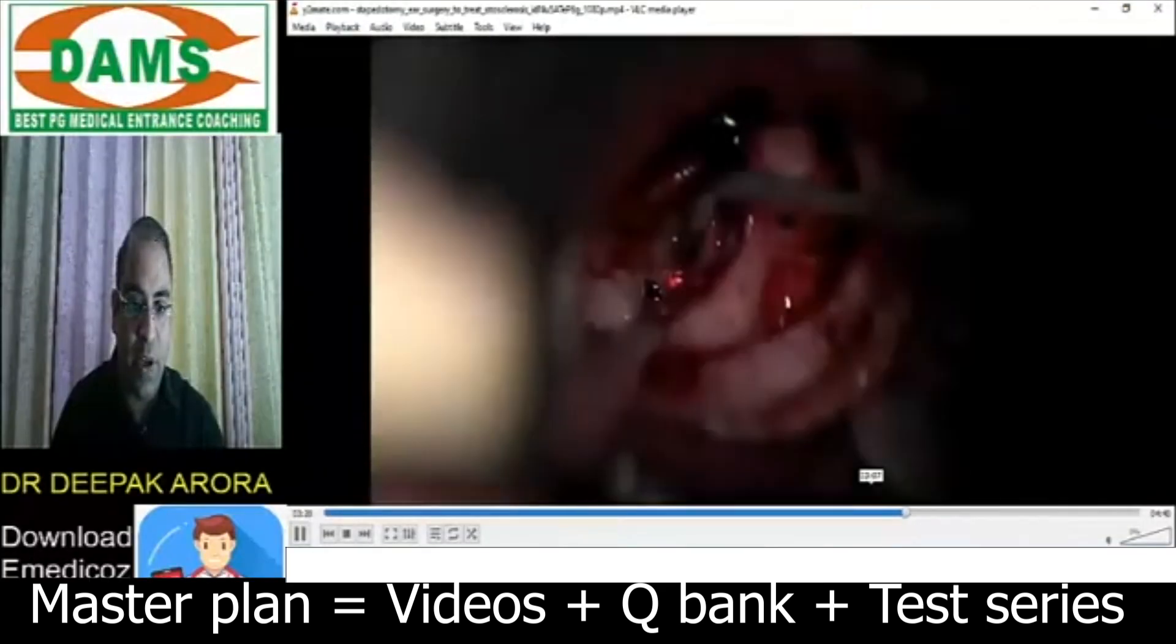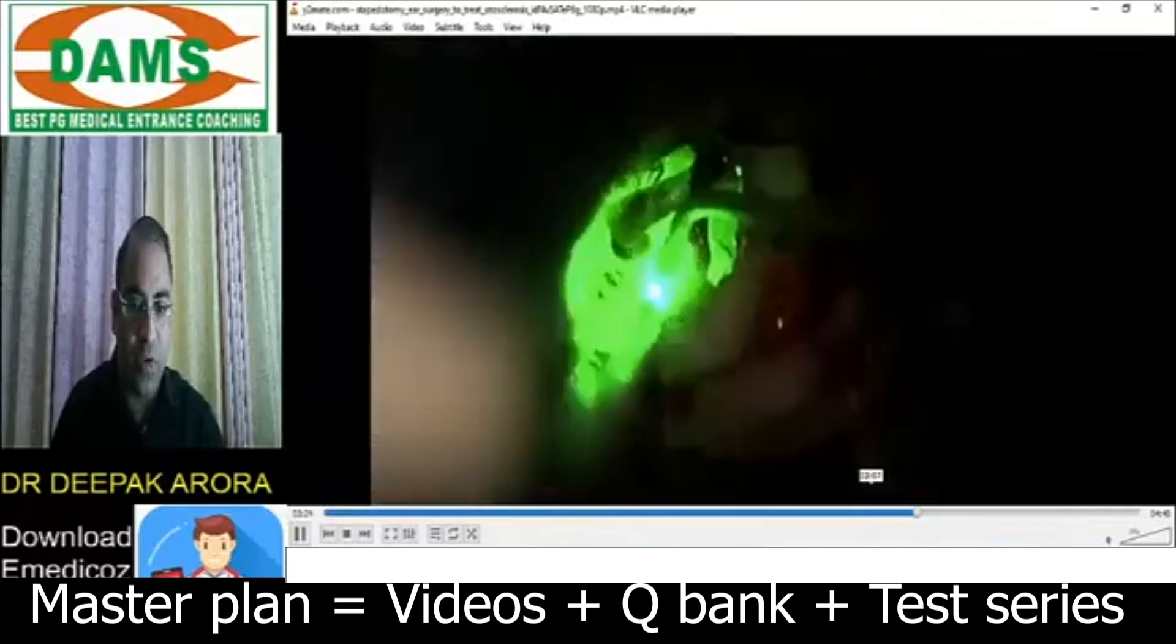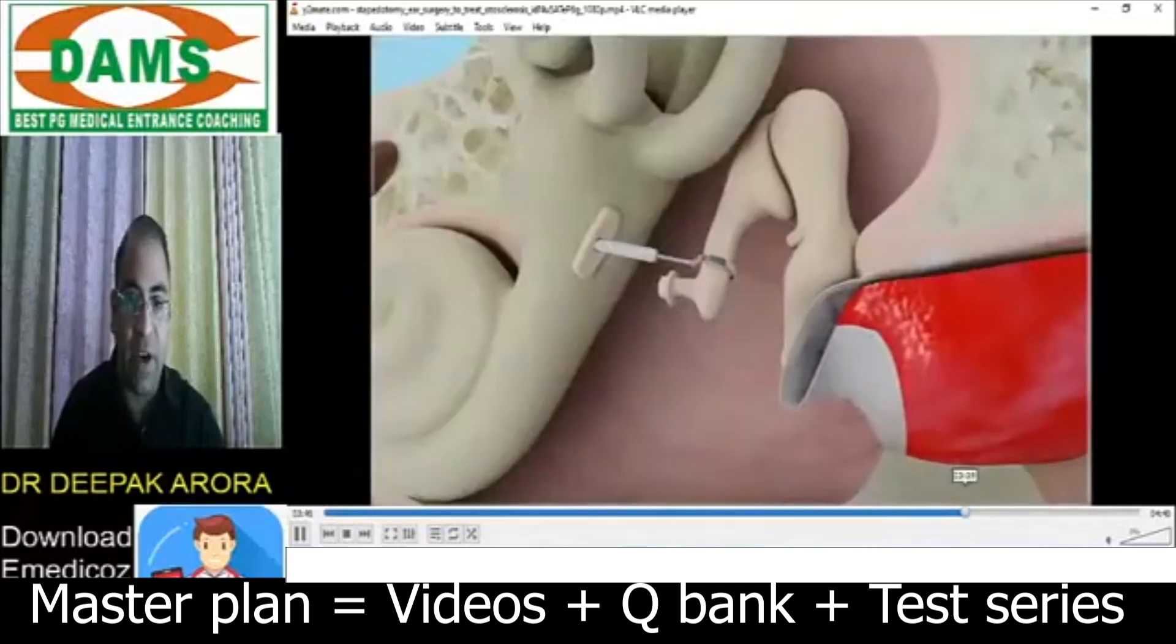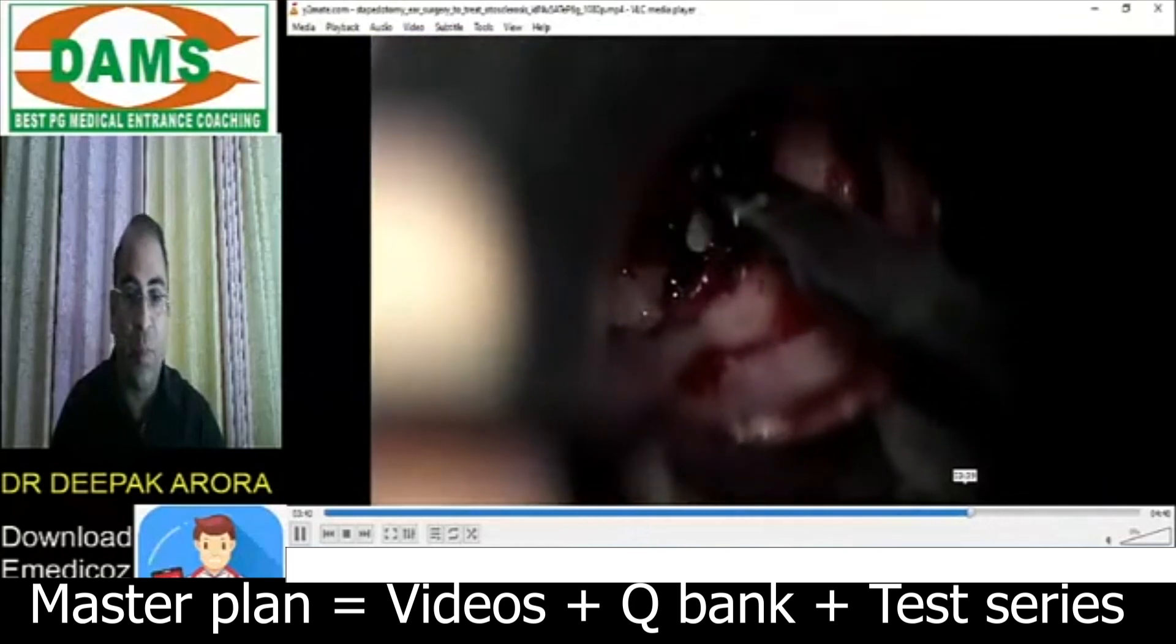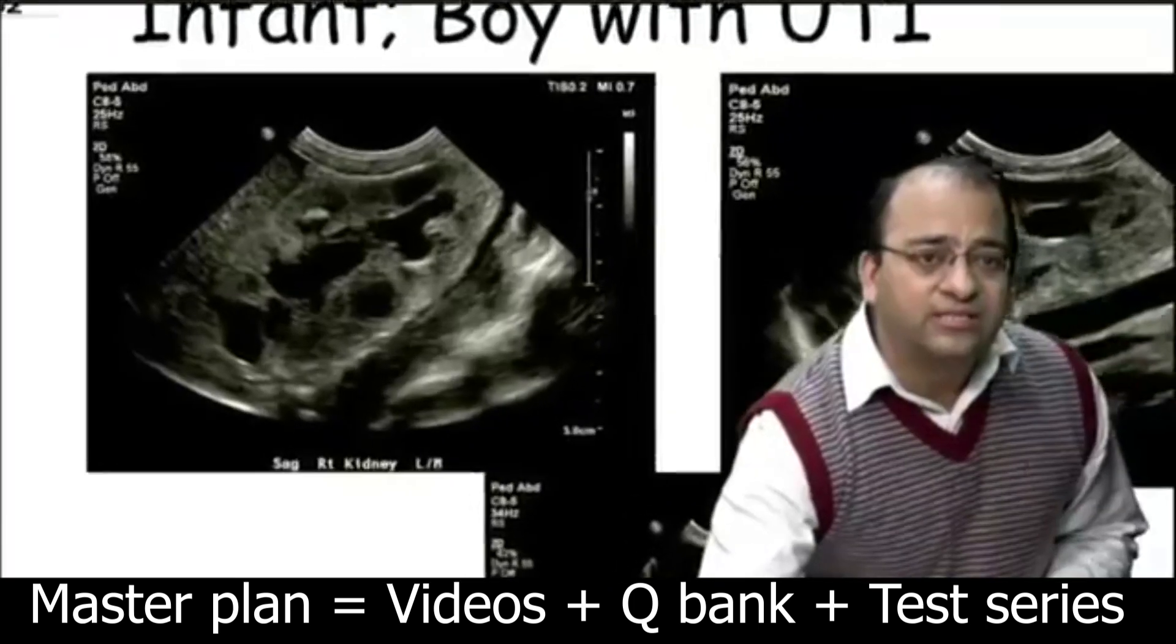With the help of laser we are removing the sclerotic foci, removing the superstructure of stapes, and finally we have to keep a prosthesis. You can appreciate we are keeping a prosthesis. This is the right kidney showing severe hydronephrosis.